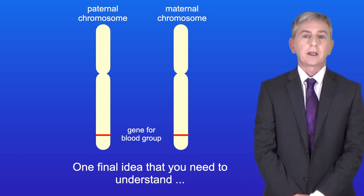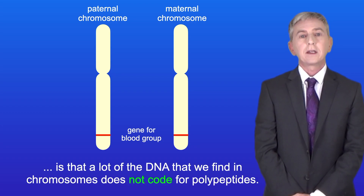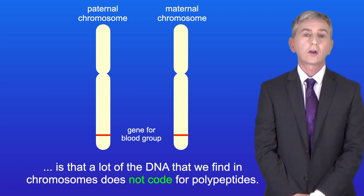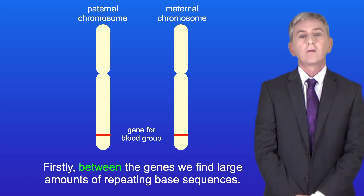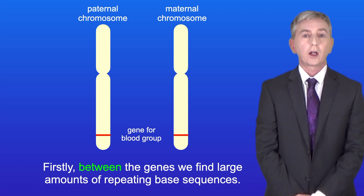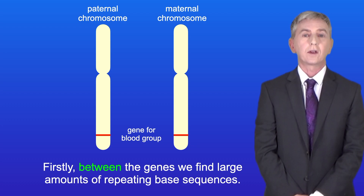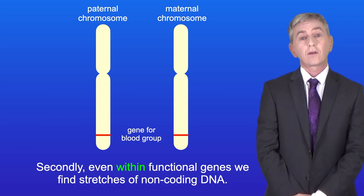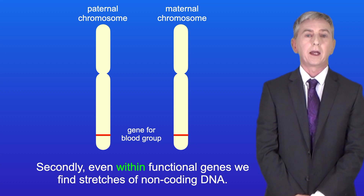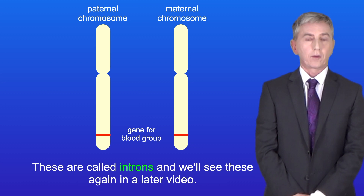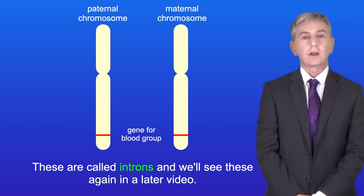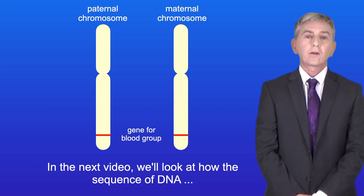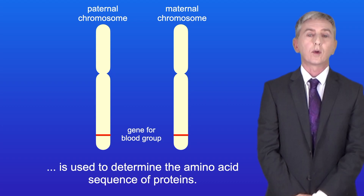One final idea: a lot of the DNA we find in chromosomes does not code for polypeptides. Firstly, between the genes we find large amounts of repeating base sequences — these repeating sequences are non-coding. Secondly, even within functional genes we find stretches of non-coding DNA called introns, which we'll see again in a later video. In the next video we look at how the sequence of DNA is used to determine the amino acid sequence of proteins.